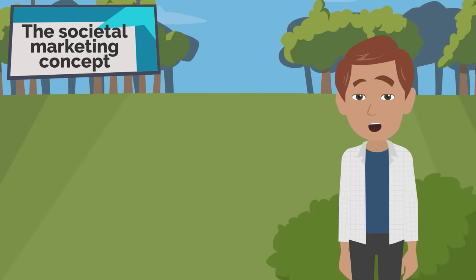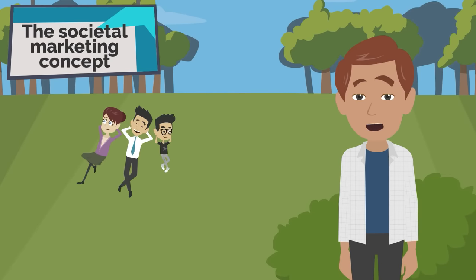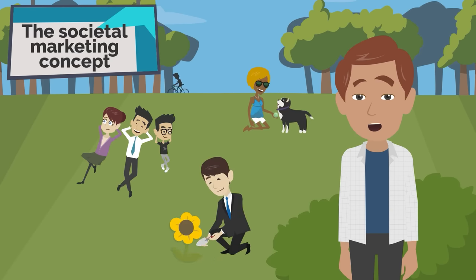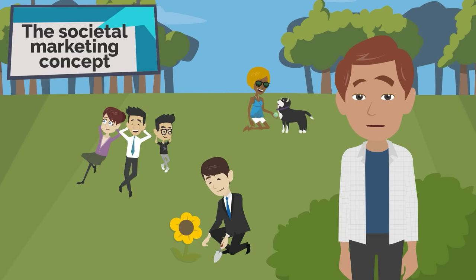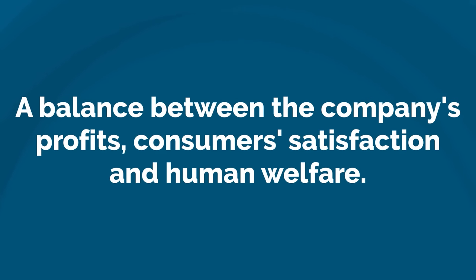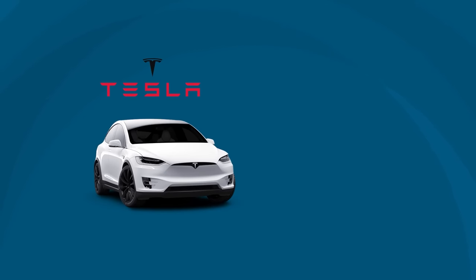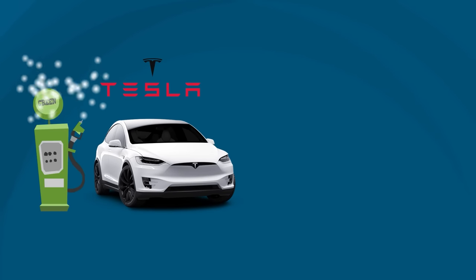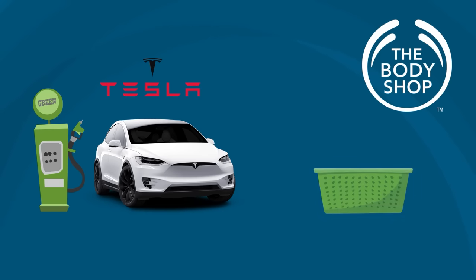The societal marketing concept focuses not so much on the short-term needs of the consumer but on the long-term well-being of the entire society, including care for the natural environment. At the same time, the company's operations should contribute to increasing the ability of future generations to meet their needs. This requires a balance between the company's profits, consumer satisfaction, and human welfare. For example, Tesla leans towards green energy and proposes environmentally friendly electric cars, and The Body Shop represents this concept by offering natural cosmetics.